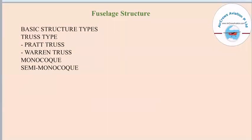The basic fuselage internal structure can be of two main types: truss type — including Pratt truss and Warren truss — and monocoque and semi-monocoque. We will now discuss each type in brief.